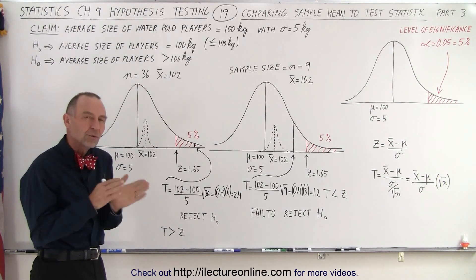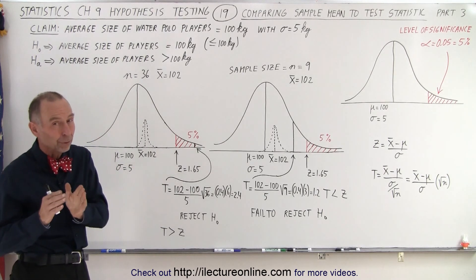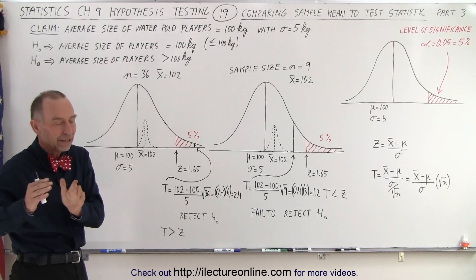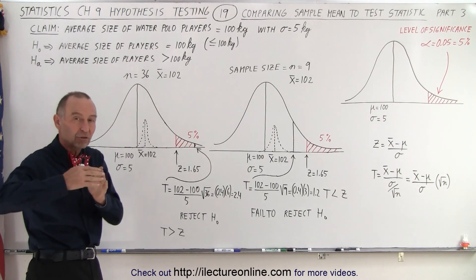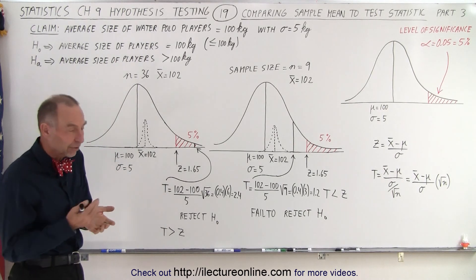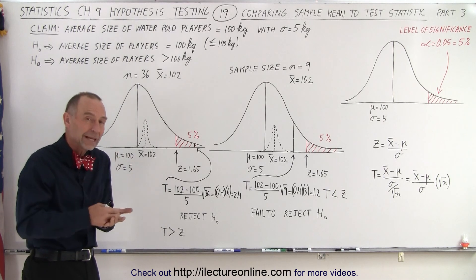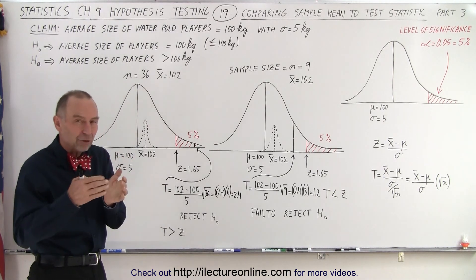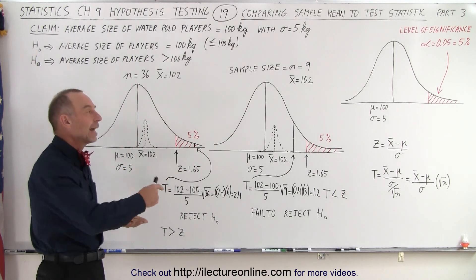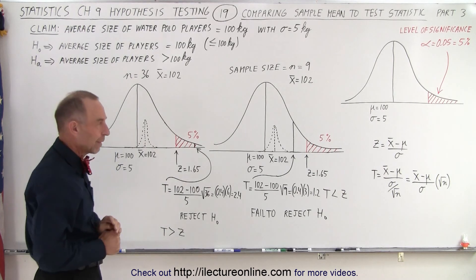We kept on increasing the size of the sample while keeping the sample mean the same at 105 kilograms, and we saw that by the time we had a sample size of 3 or greater we began to reject the null hypothesis because we had enough confidence with a sample size of 3 or greater and a mean of the sample of 105 that there was sufficient evidence that the average size of water polo players was greater than 100 kilograms.